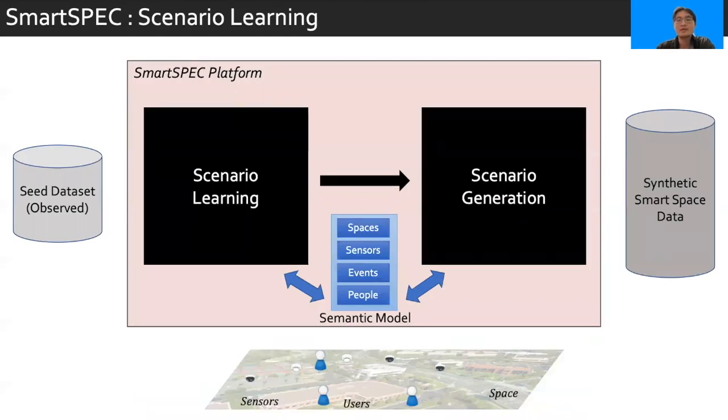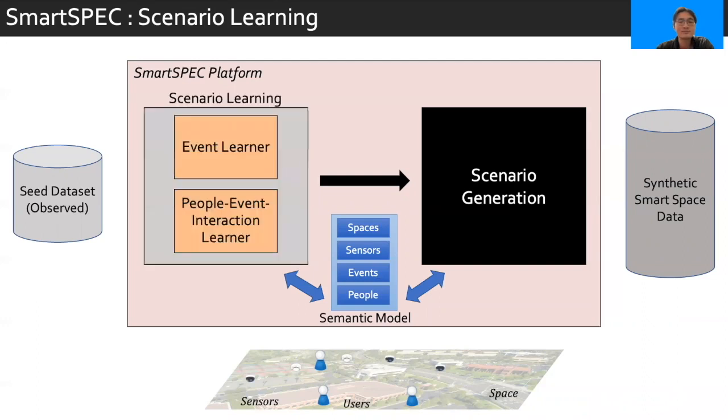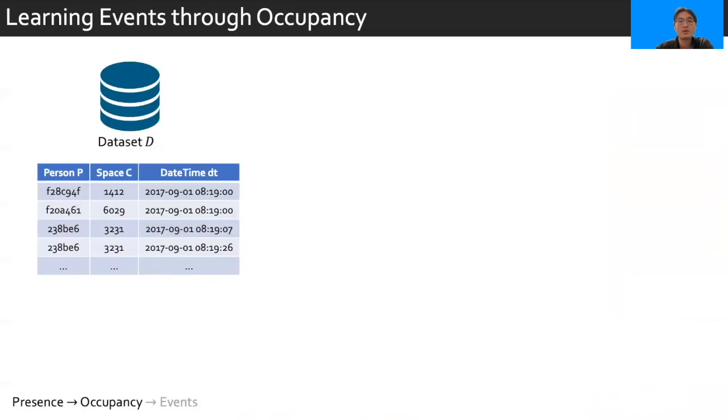In SmartSpec, we first assume that spaces and sensors are provided a priori because they are more static in nature. Then, the basic input that we have for SmartSpec takes the simplest possible dataset as a seed, which encodes a set of observed events and people. The scenario learning component will then analyze the seed data to learn different patterns and extract out models for events and people. This is done in two steps, the event learner and the people-event interaction learner. We learn events in SmartSpec through occupancy, an intermediate concept to estimate when one event ends and another starts. The key idea that we exploit is that event occupancy is changed near the end of events. As people come and go, it will stay relatively consistent during the middle of an event. We assume that seed data in SmartSpec records the presence of people in different spaces. In our case, we have Wi-Fi connectivity datasets. Formally, these datasets consist of three tuples of a person P occupying a space C at some datetime dt.